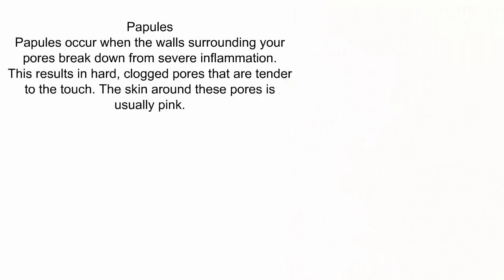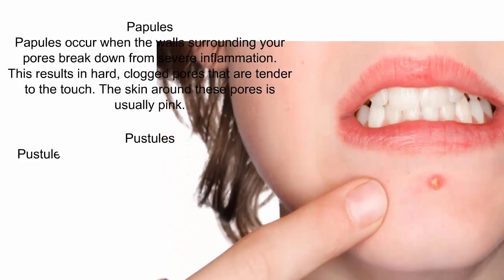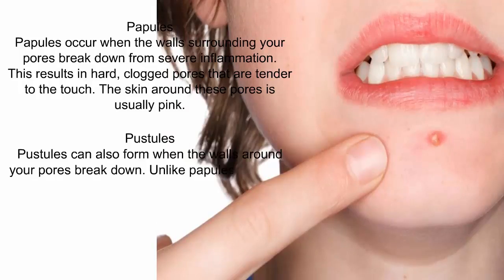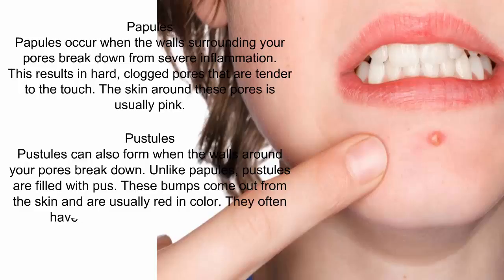Pustules can also form when the walls around your pores break down. Unlike papules, pustules are filled with pus. These bumps protrude from the skin and are usually red in color, and they often have yellow or white heads on top.